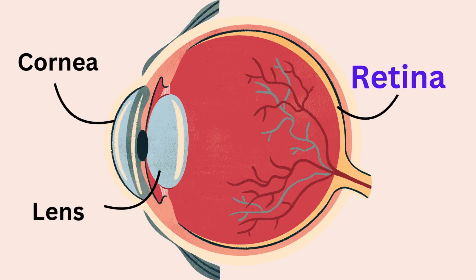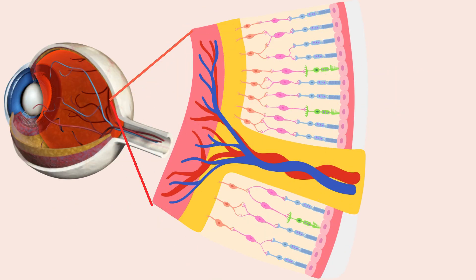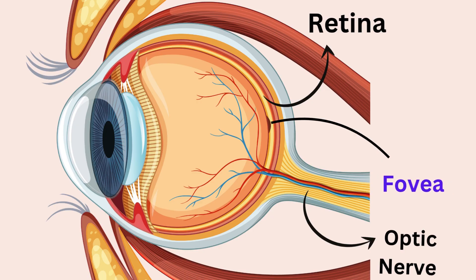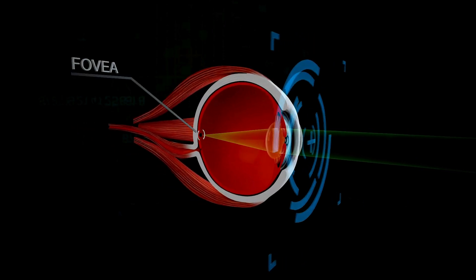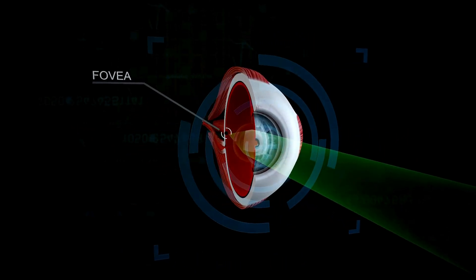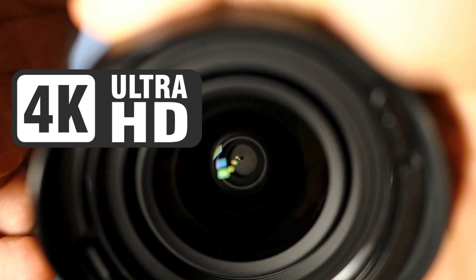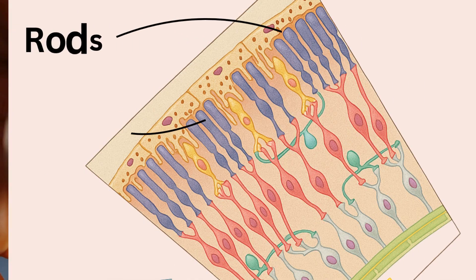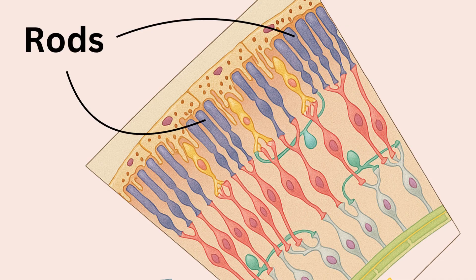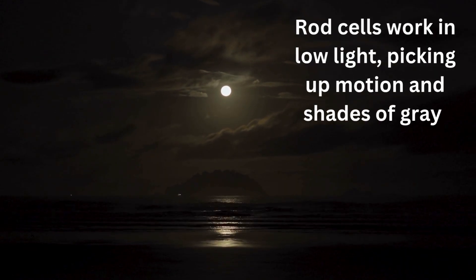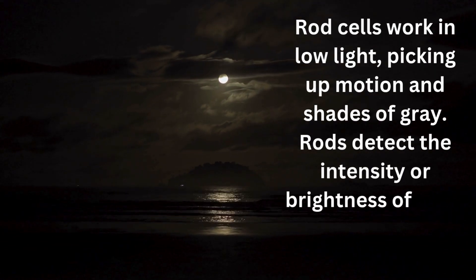The retina is a thin innermost layer of the eyeball that acts like a movie screen. It is packed with millions of light-sensitive photoreceptor cells called rods and cones. Cones are present at a special part of the retina called the fovea — your eye's superstar for sharp vision. This tiny pit is packed with cone cells that capture color and detail, making it like your eye's high-definition camera. Scattered across the retina away from the fovea are rods, your eye's night vision experts. These cells work in low light, picking up motion and shades of gray, and detect the intensity or brightness of light.